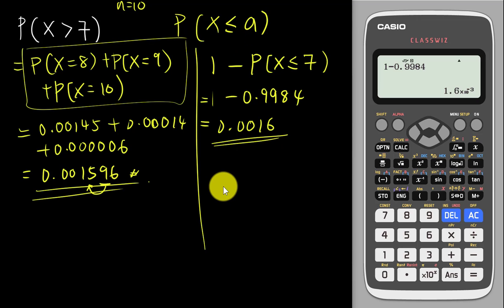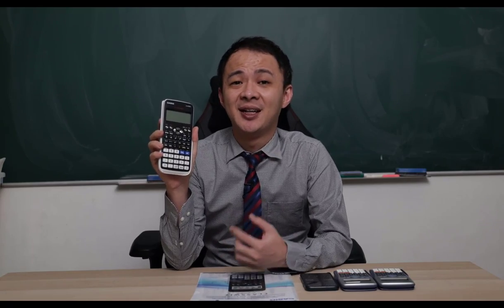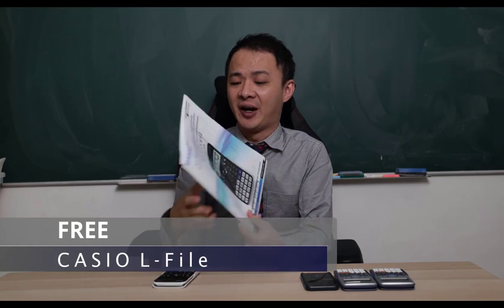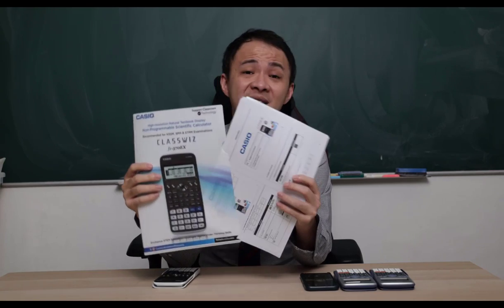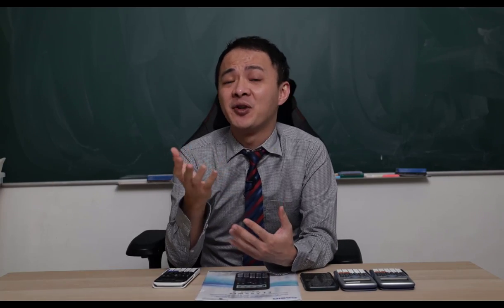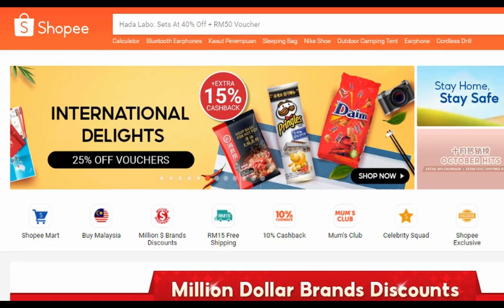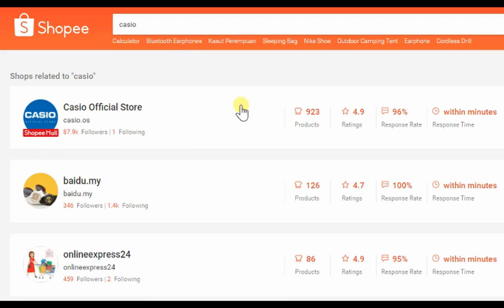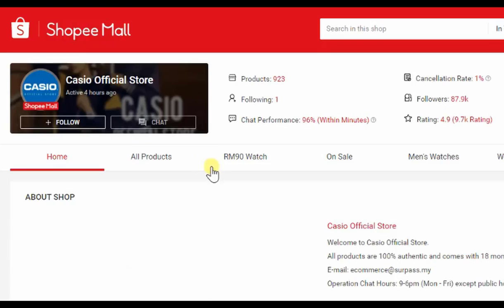I hope you found this video helpful. If you're interested in getting this calculator, I'll share a Shopee link in the description below leading to the Casio official store. Casio Malaysia is currently running a promotion — anyone who buys from the official store will receive a free Casio L-file. To use the voucher, go to Shopee, search 'Casio', click on the Casio shop, and find the Casio scientific calculator. You can also search '570EX' directly.